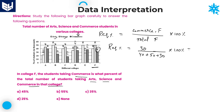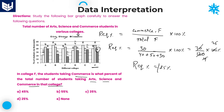Commerce is the third bar, which is 30. Divided by total: 40 plus 50 plus 30, that is 120 in college F. Into 100. So this equals 30 divided by 120, into 100. That gives 25. Therefore, the required percentage is 25%. 25% is the right answer for this question, which is option D.